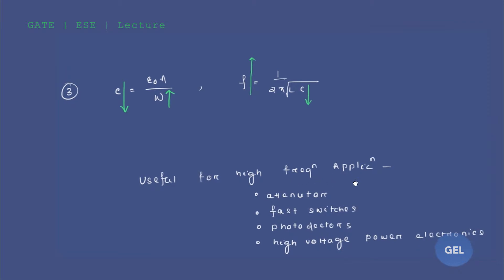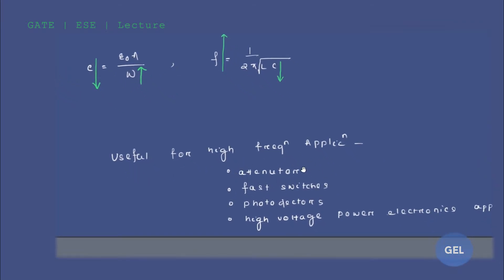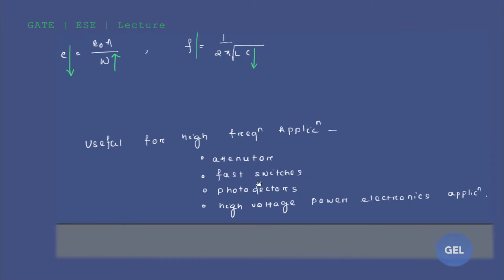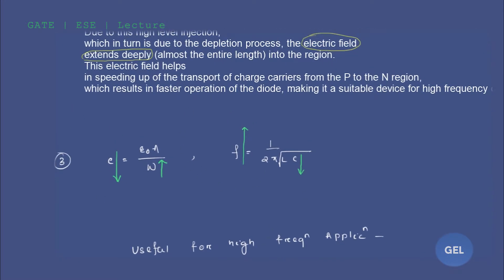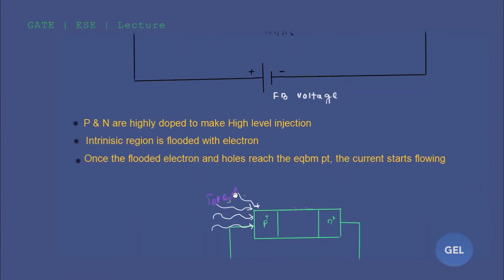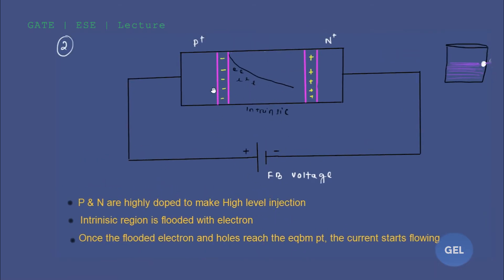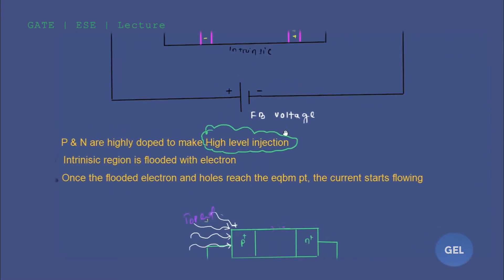The PIN diode is useful for high-frequency applications such as attenuators, fast switches, photo detectors, and high-voltage power electronics. Always remember these small points. The working phenomena is: because of the difference in carrier concentration between the two sides, the injection occurs — and that injection is nothing but your high-level injection. This concept of high-level injection is very important for exam questions.